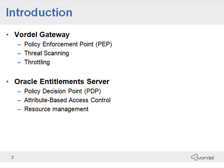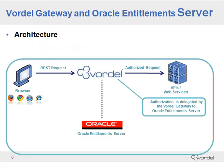The Gateway also performs threat scanning and throttling of the incoming traffic. In this example, we'll see a REST request coming from a browser. The Vordell Gateway is delegating authorization to Oracle Entitlement Server, and then only authorized requests are allowed forward to an API.